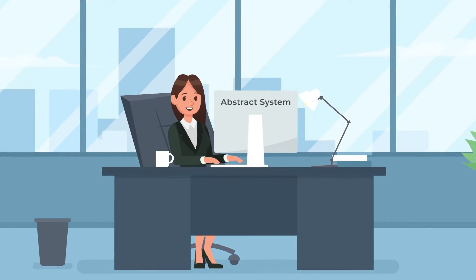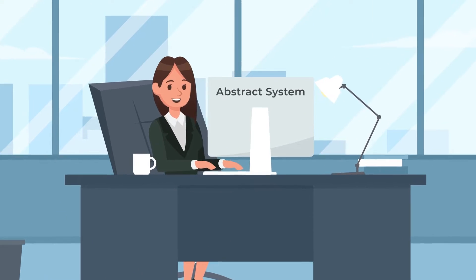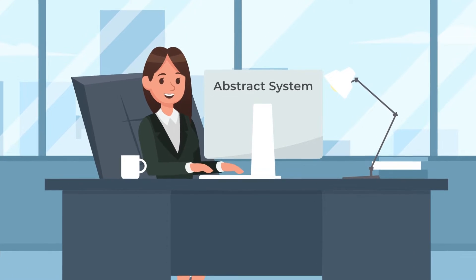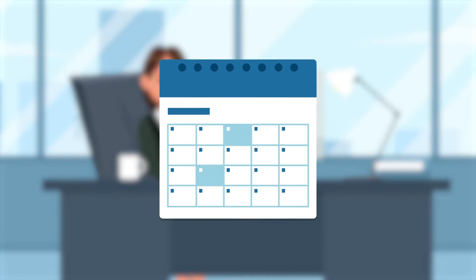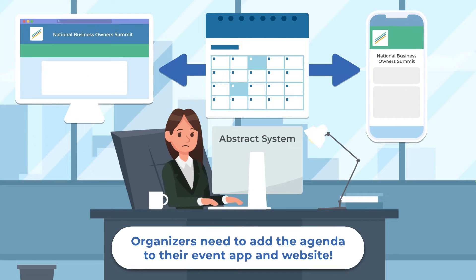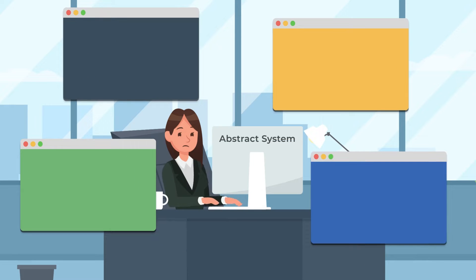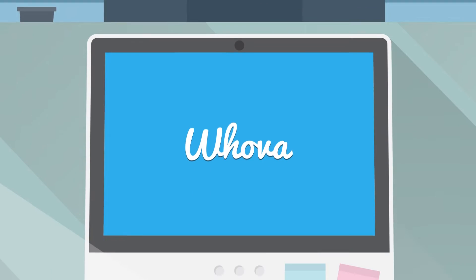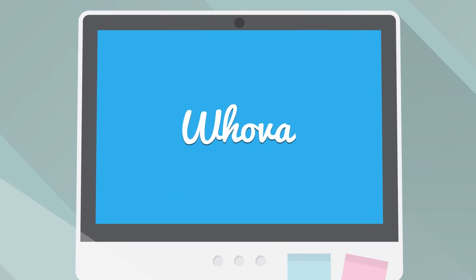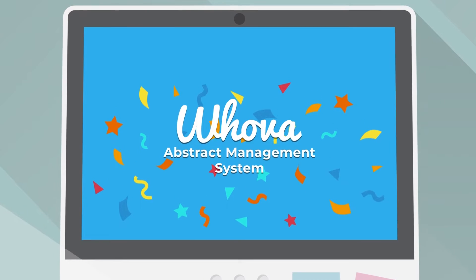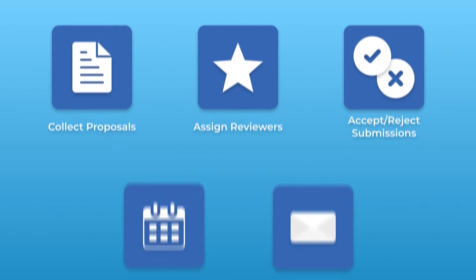To manage the whole call for speakers process, most event organizers use an abstract system to collect submissions and manage reviews. Once reviews are completed and decisions finalized, organizers proceed to construct the event agenda, then upload both the agenda and speaker information onto their event app and website — a tedious process that requires juggling multiple different platforms.